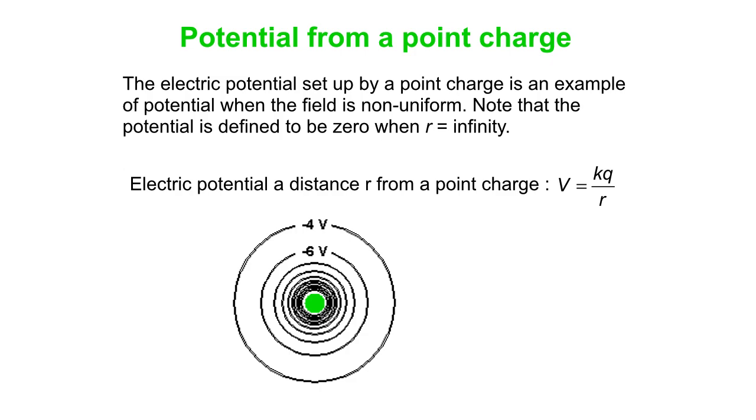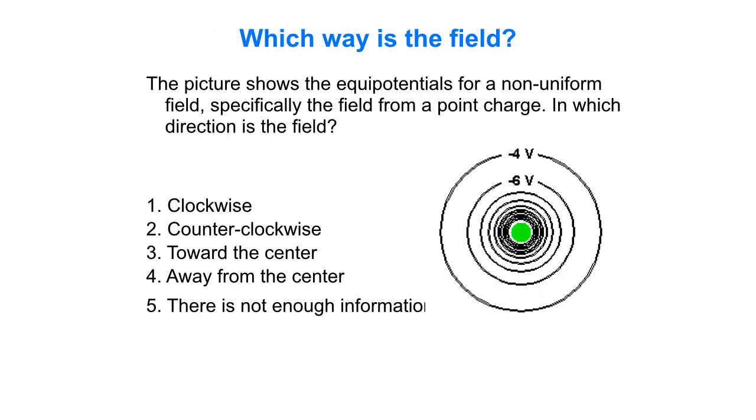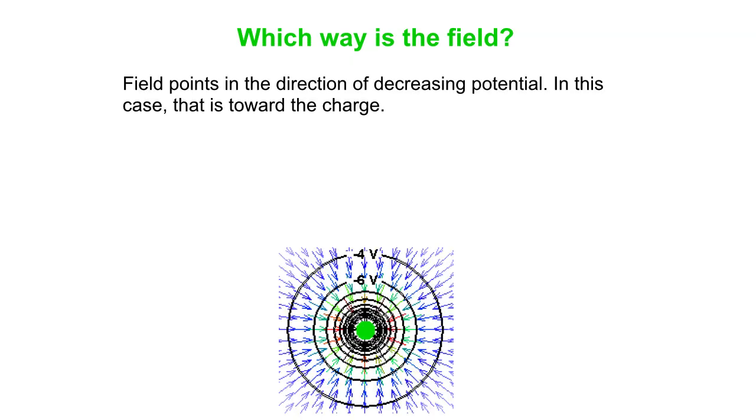Which direction is the electric field? Let's see what you think. In which direction is the field if that was your equipotential configuration, some unknown charge in the middle? Which way is the field? The field points in. The only way you can get a negative potential is that it comes from a negative charge. Negative charge contributes a negative amount to the potential. Positive charge contributes a positive amount.